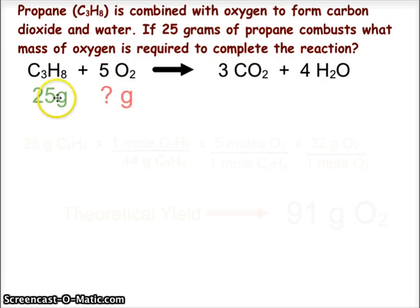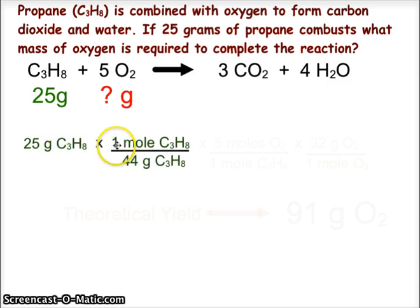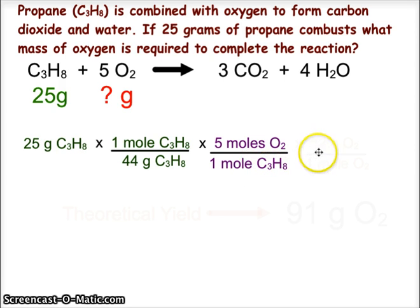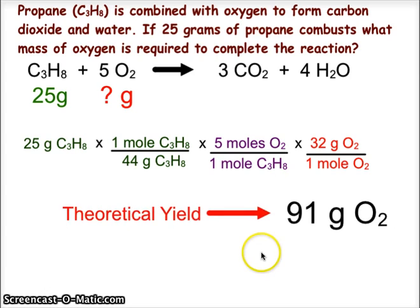We are given 25 grams of propane and asked to find how many grams of oxygen. We begin by converting the 25 grams of propane using the gram formula mass of propane, which is 44 grams. We then use the mole ratio from the balanced chemical equation, 5 moles of oxygen for every 1 mole of propane. We follow that up with the gram formula mass of oxygen over 1 mole of oxygen to convert to grams of oxygen.